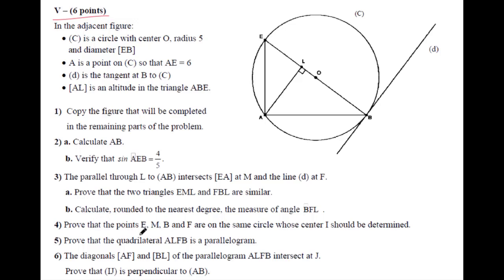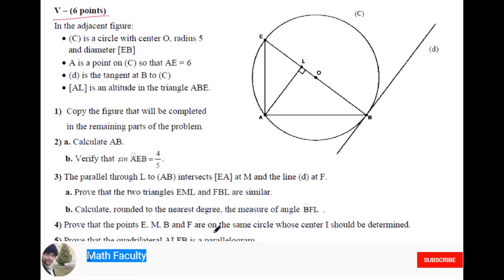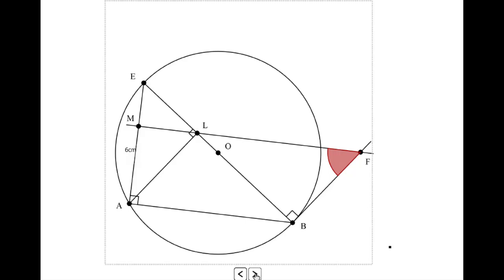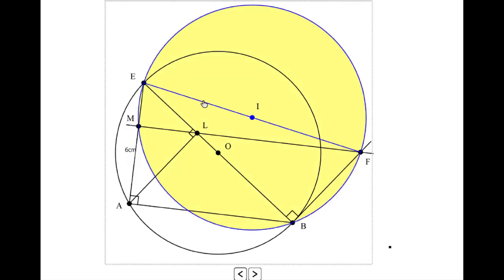Prove that E, M, B and F are on the same circle where center I should be determined. Looking at angle EMF, EMF is a right angle. Why? Because MF is parallel to AB, and AB is perpendicular to EA, so angle M is 90 degrees.